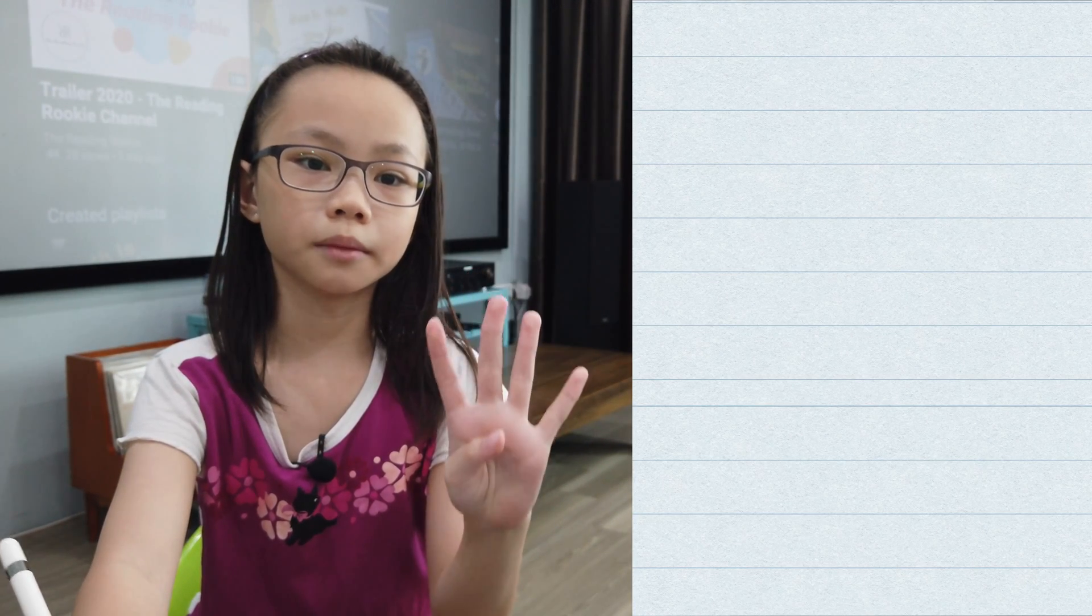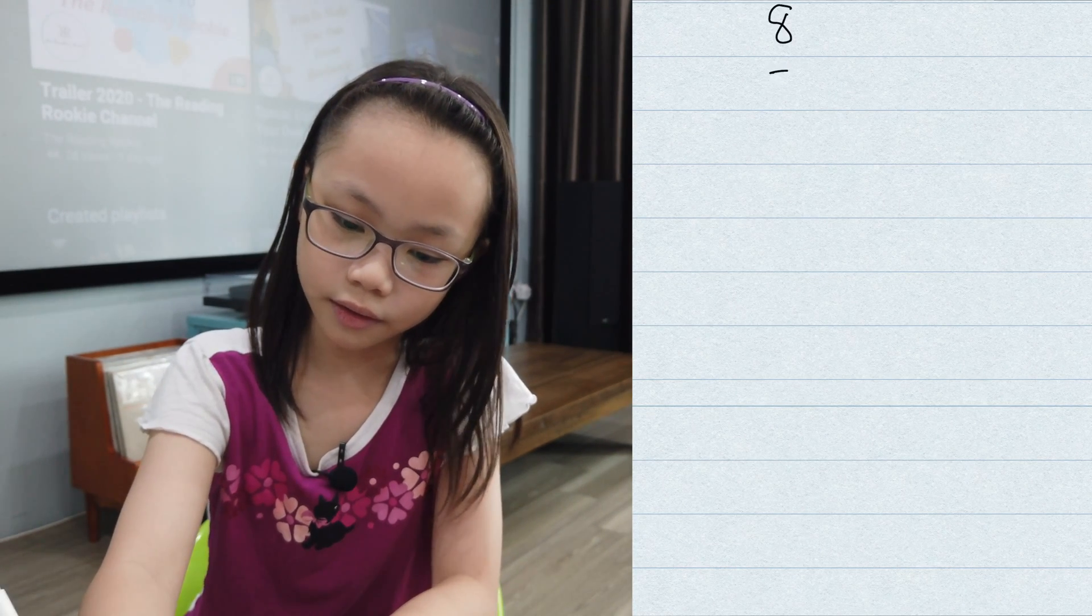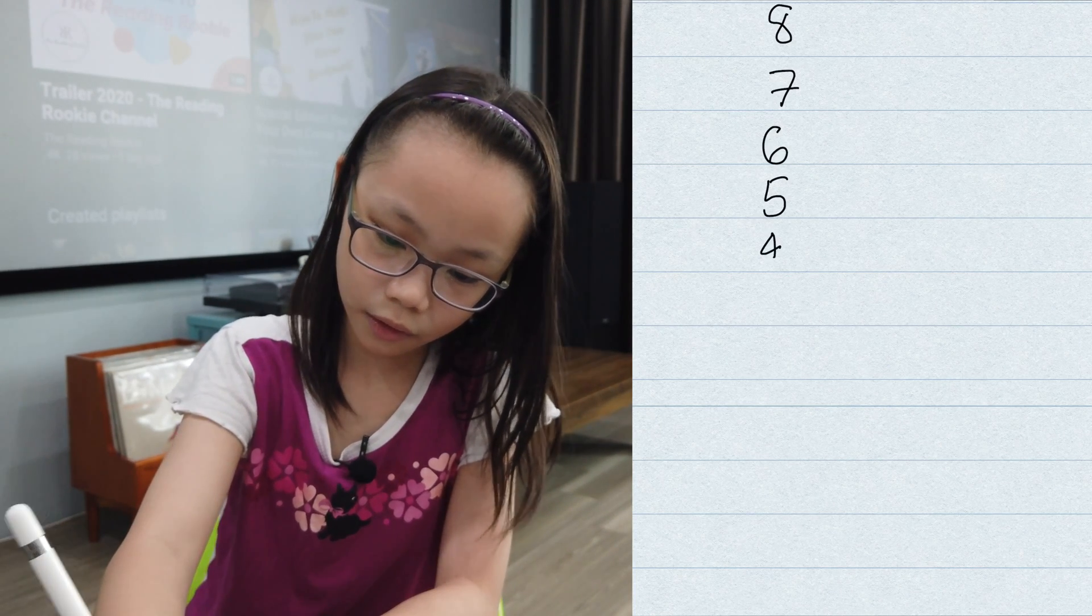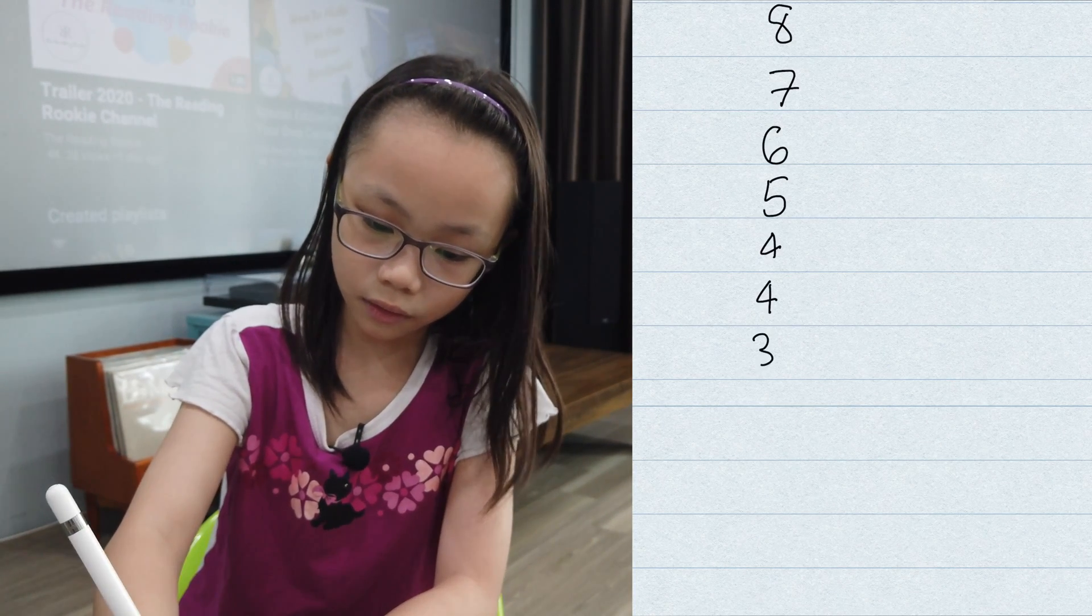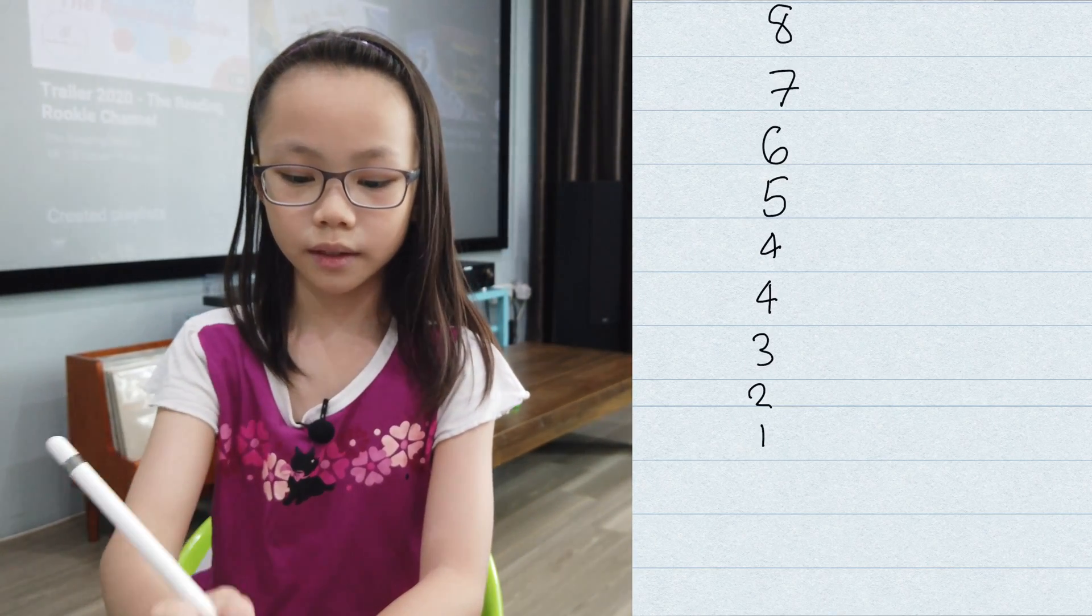First, we need to write the numbers 1, 0, but with a double 4, like this: 8, 7, 6, 5, 4, 4, 3, 2, 1, and a 0.